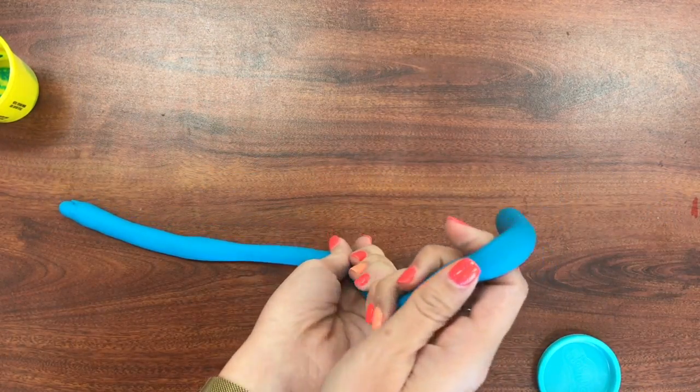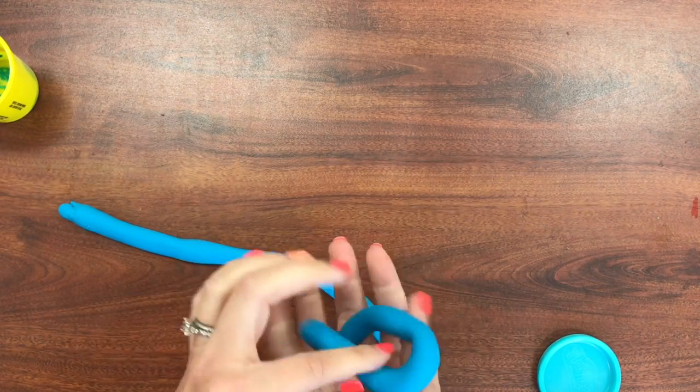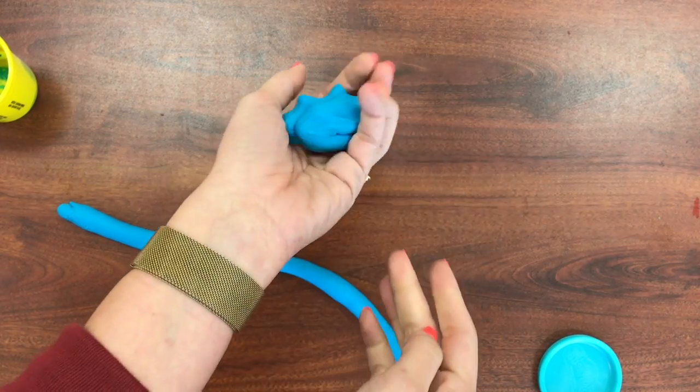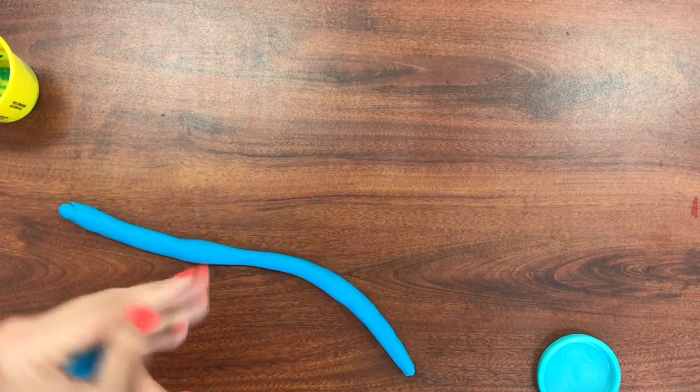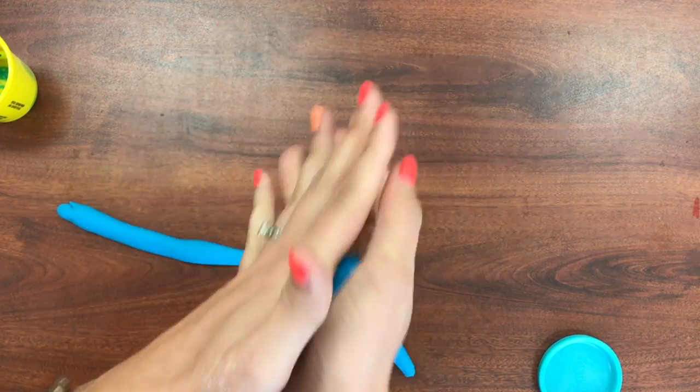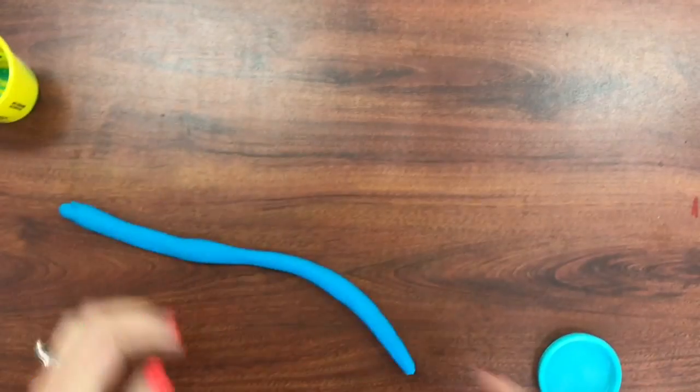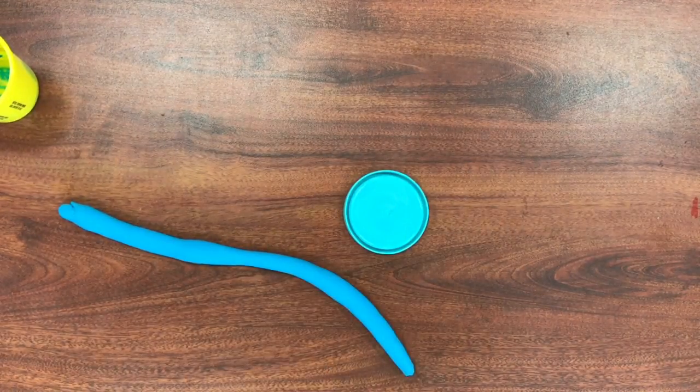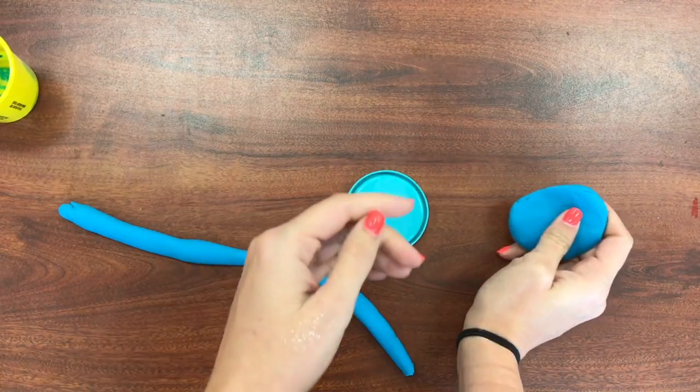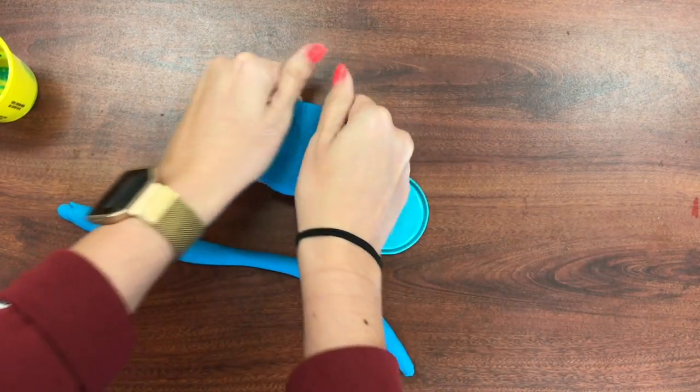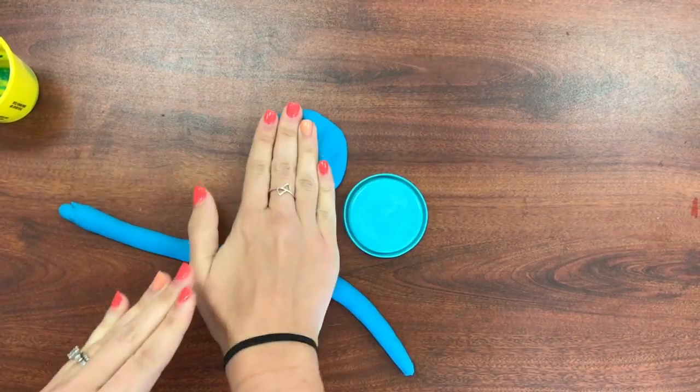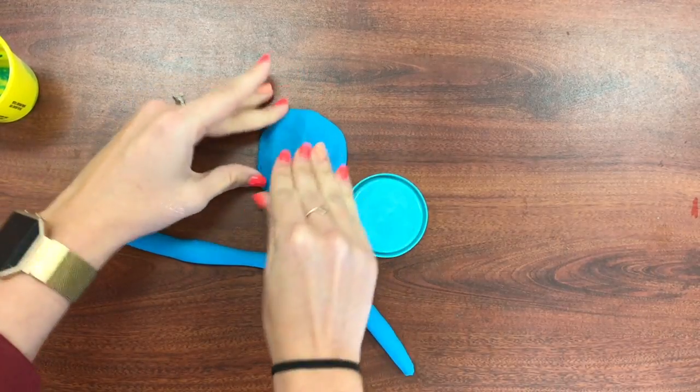The last time you do it, I want you to leave a big chunk about this big. And what you're going to do with this last chunk is you're going to smash it down into a circle about the size of your cap there. And what you're going to do is you're going to make that flat kind of like the bottom of a pot.